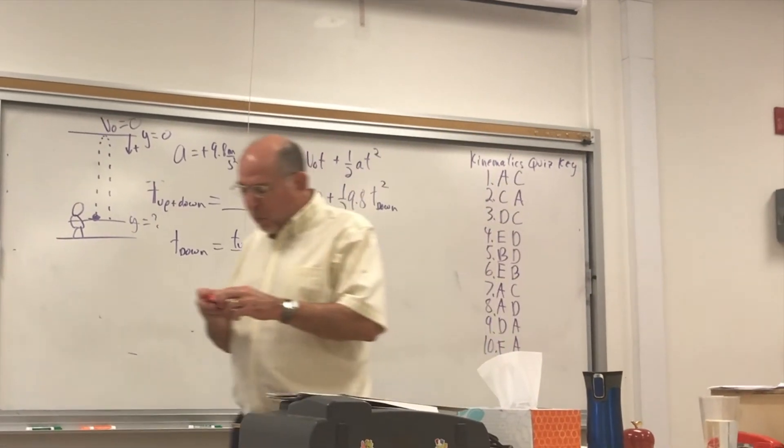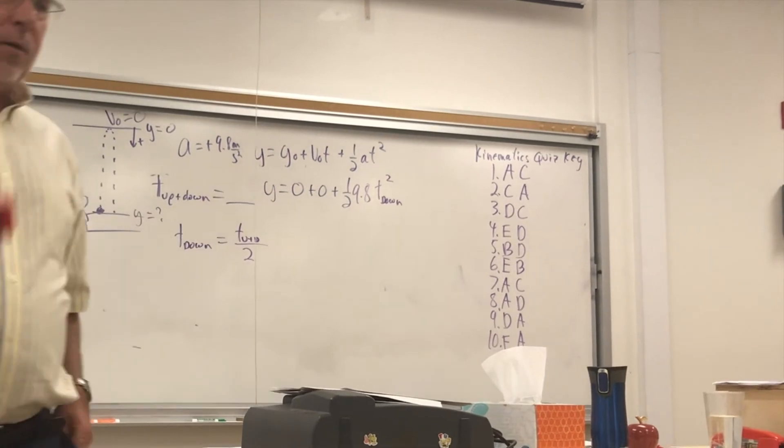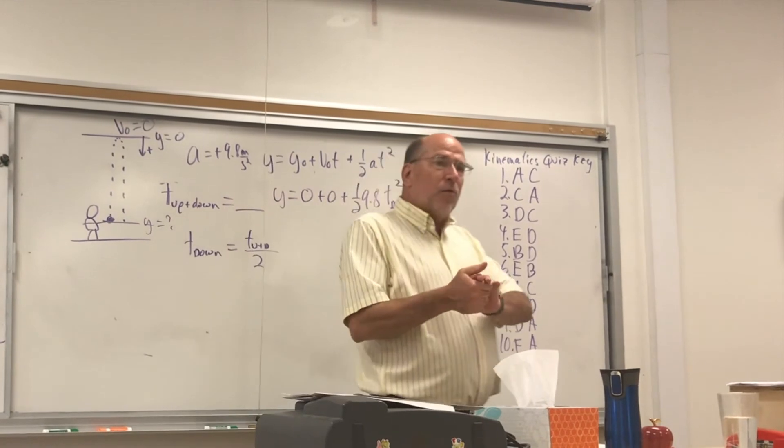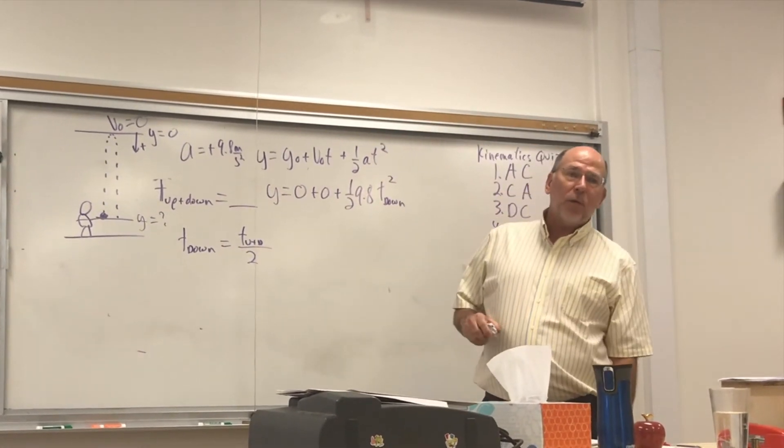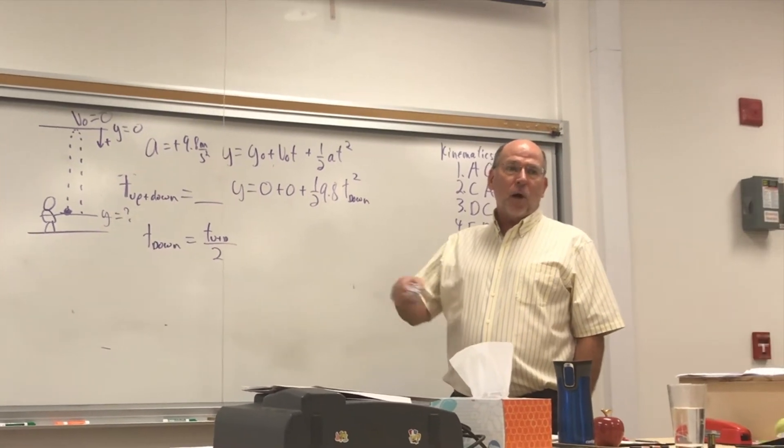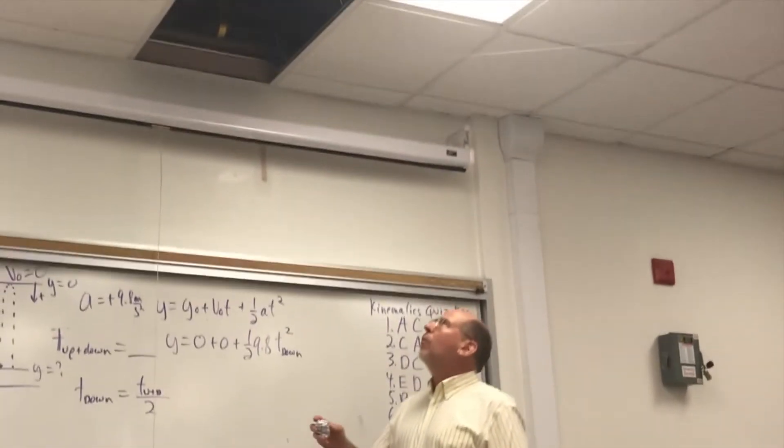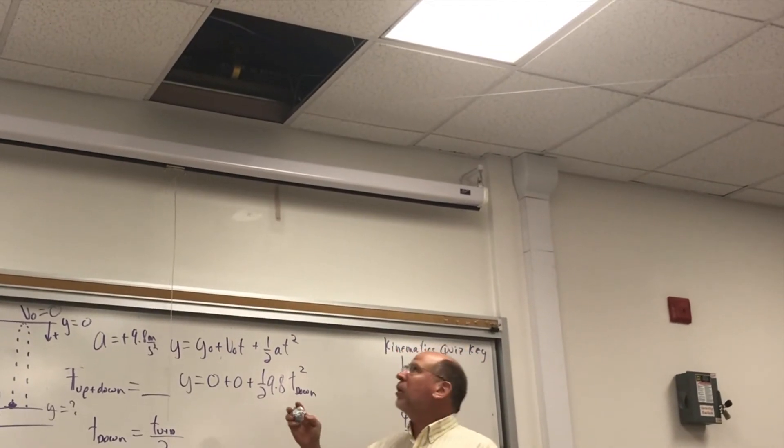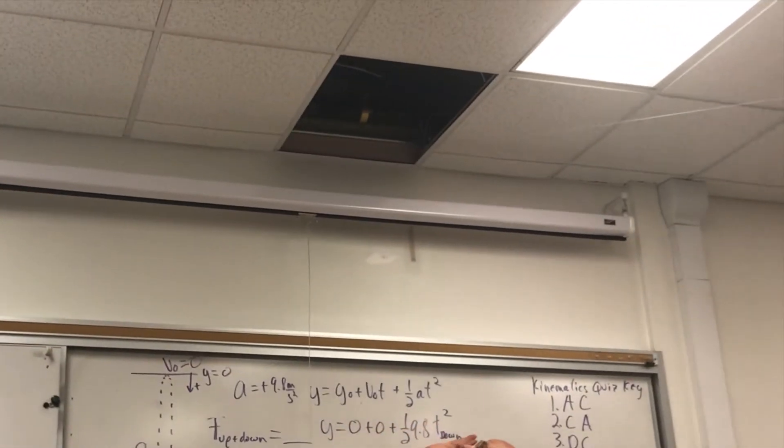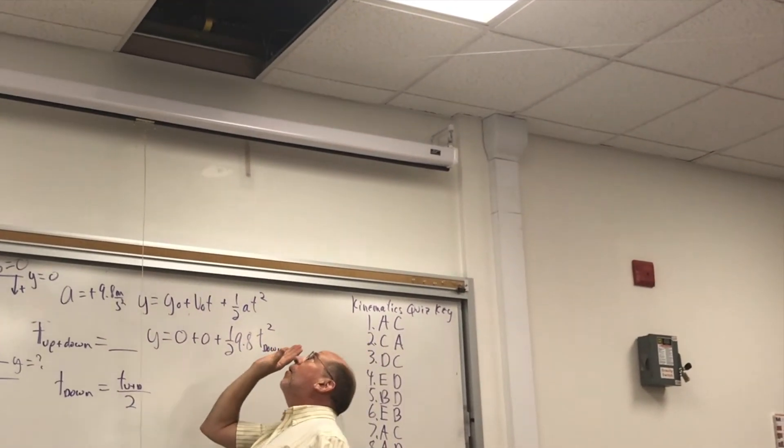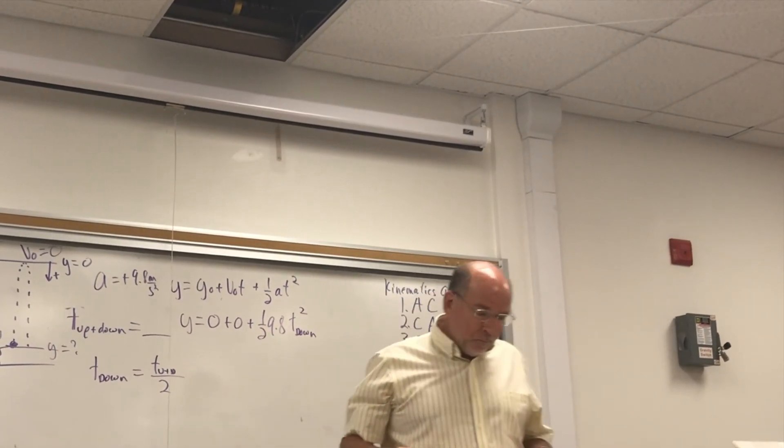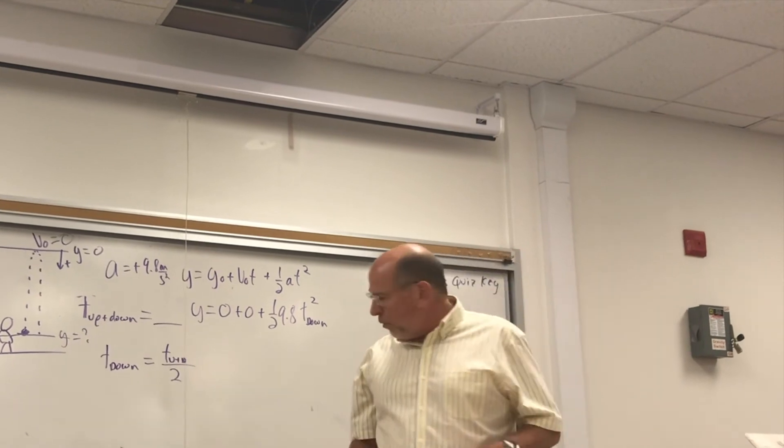So I can't really throw the paper wad and time it. Can you time for me? Sure. So when the paper wad leaves my hand, start it. And then when I catch it, stop it. And sometimes it bounces off the ceiling. And so I'll give you a chance to reset it if that happens. Ready? It takes some skill. Ready? How much time? 8.02 seconds. 8.02 seconds.